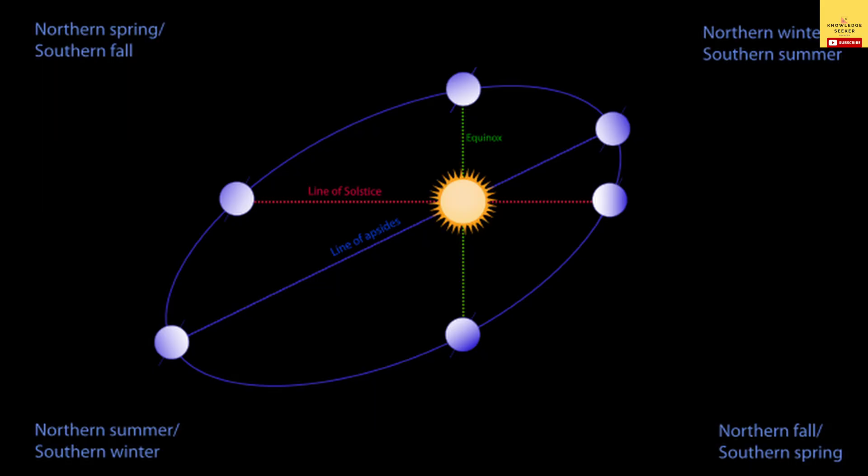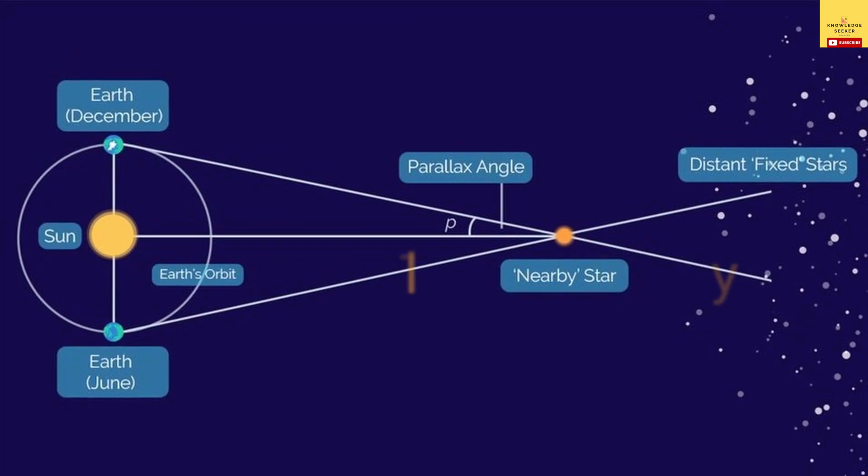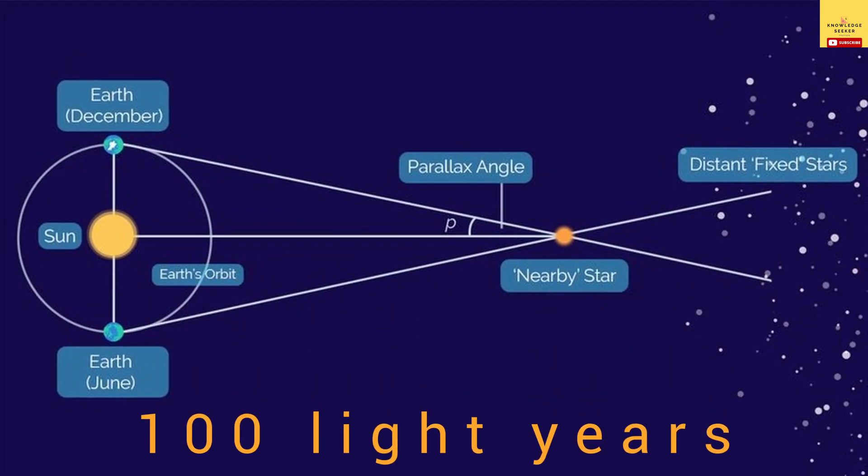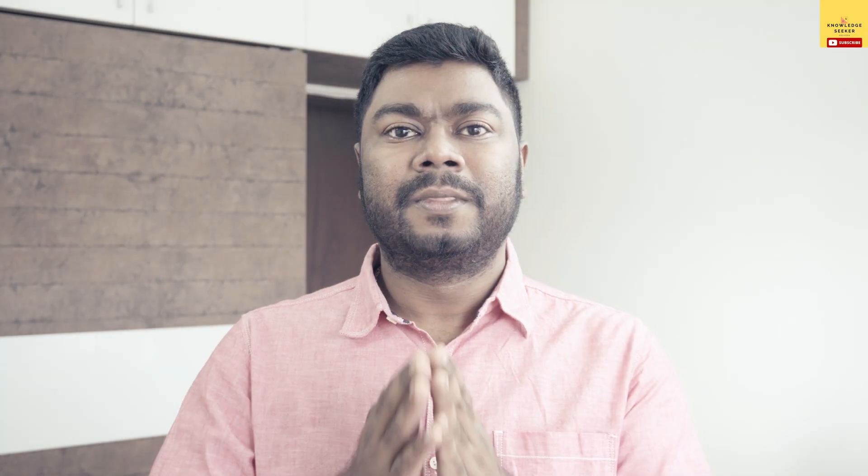In a period of six months the position of Earth around the Sun changes quite a lot, and using this change in position we can use the parallax method to calculate the distance of stars up to about 100 light years away from us. Using this parallax method we cannot calculate the distances of stars or any other celestial objects which are more than 100 light years away from Earth.